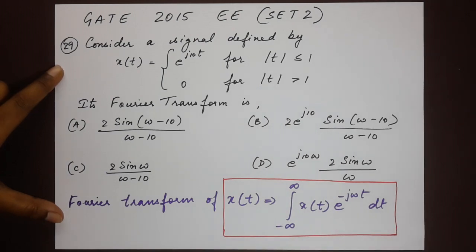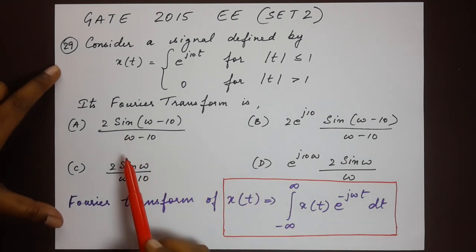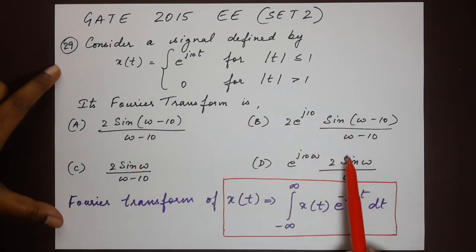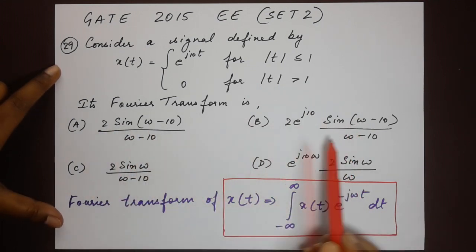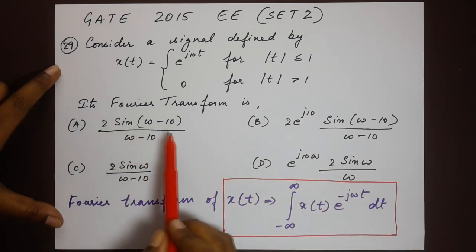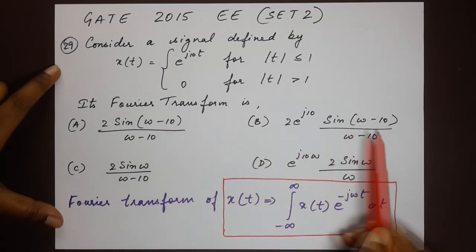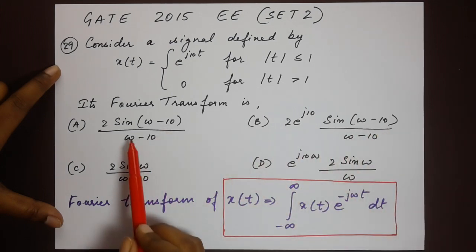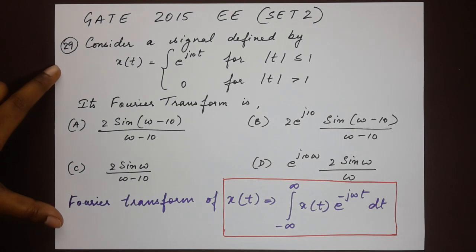Also note the four options given — they are all in terms of sine, and the argument inside the brackets is in terms of (ω − 10). Let's keep that in mind while solving the problem.